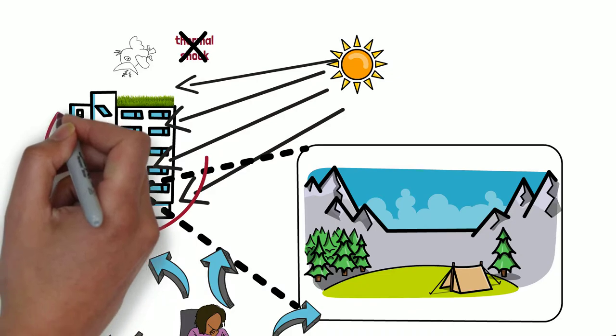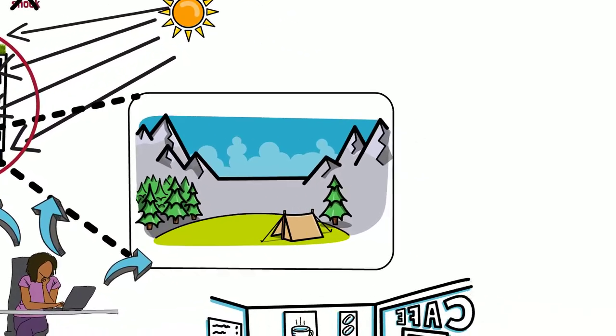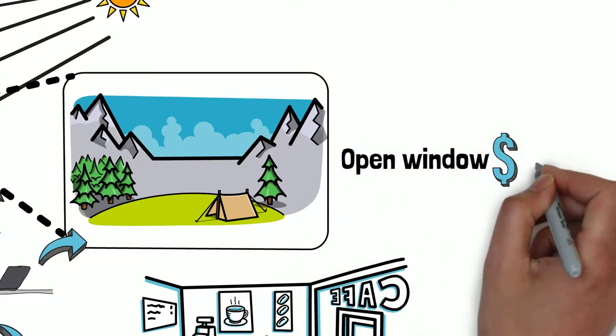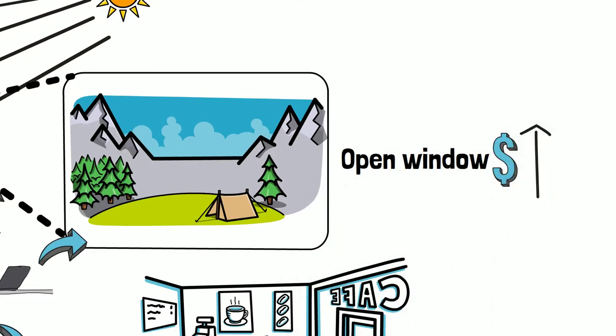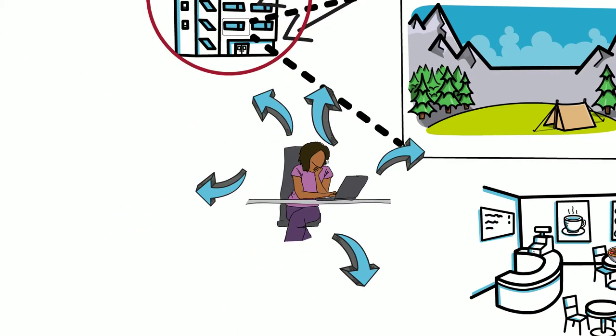Although this building is a perfect example of being efficient, it might cost more during construction. For example, windows that open are more expensive than windows that do not. However, the nighttime cooling strategy cuts down on the need of air conditioning. Employees have the advantage of fresh air and makes the indoor spaces more pleasurable, hence providing productive work.